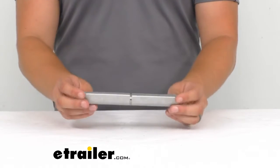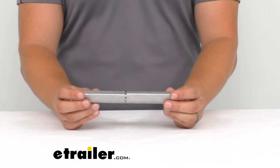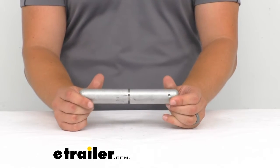Hi everyone, Aiden here with eTrailer.com and today we're going to be taking a look at this weld-on hinge with stainless steel bushing and pin from Marlboro.